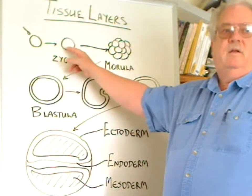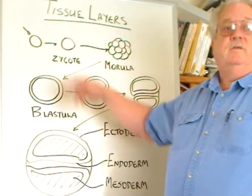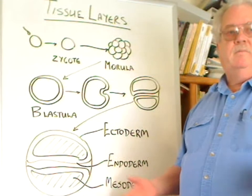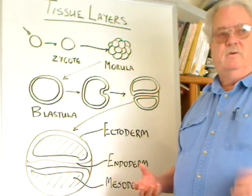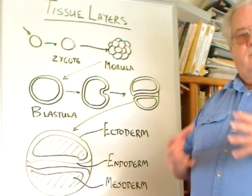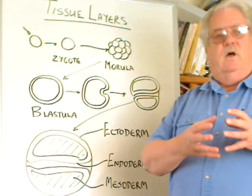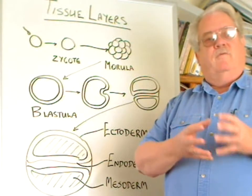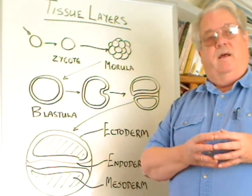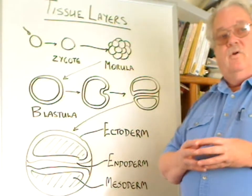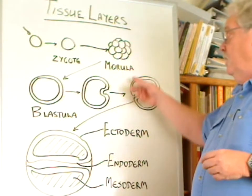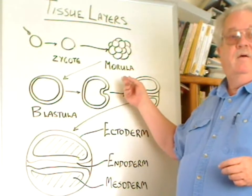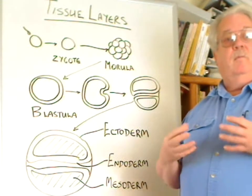This cell then goes through a series of divisions and becomes a number of similar cells that are packed into a solid ball. It looks sort of like a berry. As a matter of fact, it's called a morula, which is Latin for a mulberry.